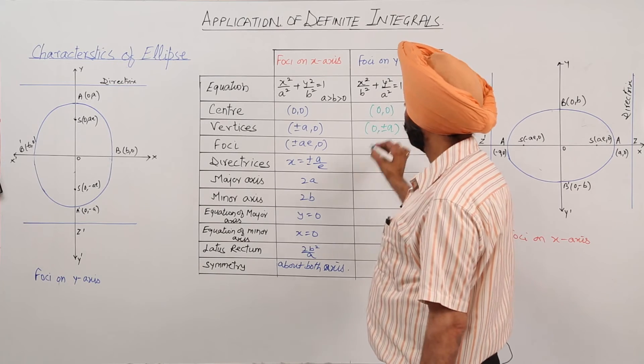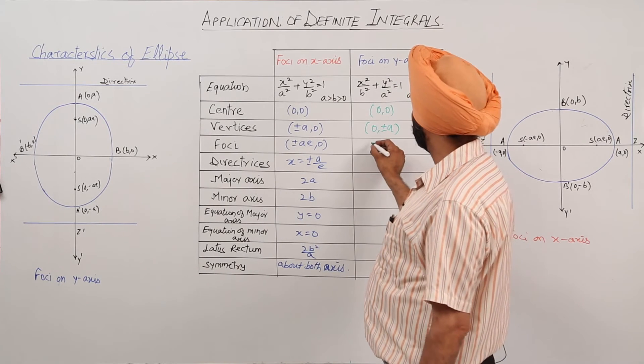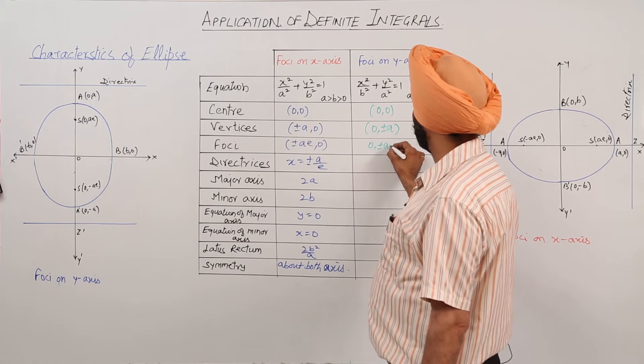Vertices: 0, plus minus a. X square upon b square plus y square upon a square. Foci: 0, plus minus ae.